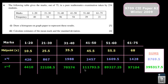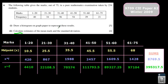Now that we have constructed our histogram, we're going to move to part 2 and calculate estimates of the mean mark and the standard deviation. Because we're doing a calculation now rather than constructing a histogram, we had made all of these new boundaries like 0.5, 20.5, 30.5, 40.5 — we're not going to use those anymore. We're going to go back to our old bounds from 1 to 20, 21 to 30, and so on.